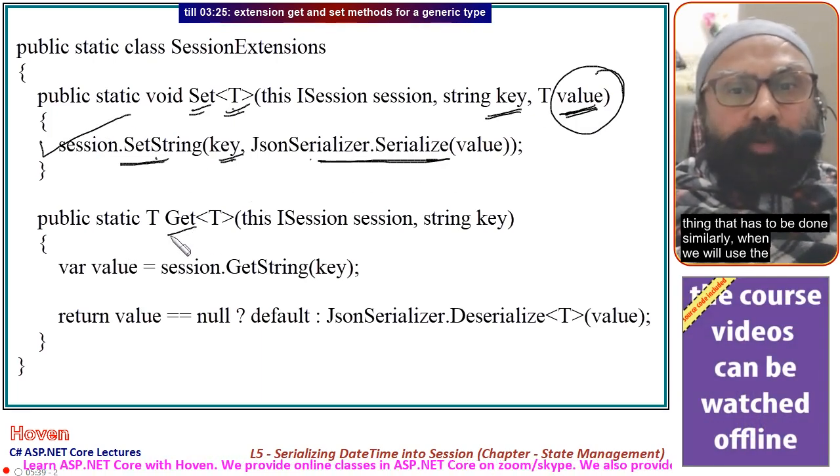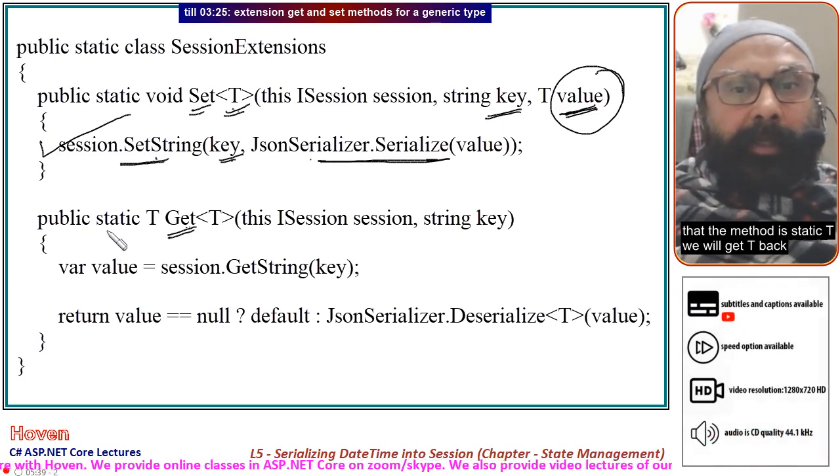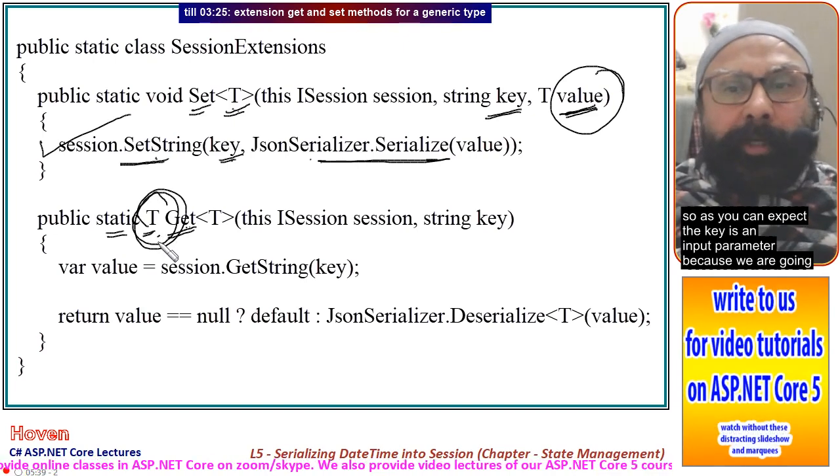Similarly, when we will use the get method to read it back, we can see that the method is static T, we will get T back. So as you can expect,